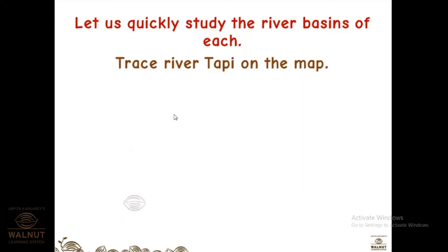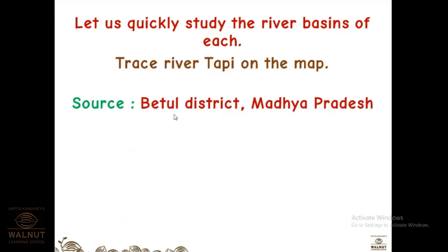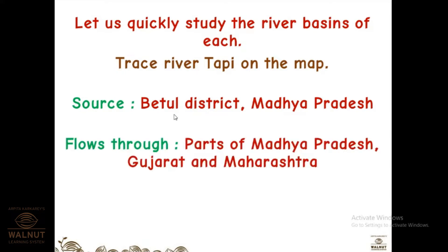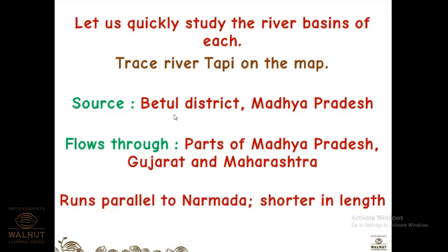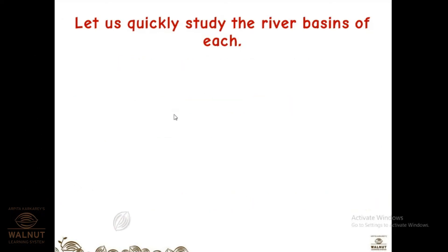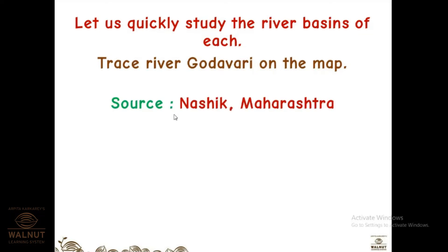Next is the Tapi River, which originates in Betul district in Madhya Pradesh. It flows through parts of Madhya Pradesh, Gujarat, and Maharashtra. It runs parallel to Narmada and is shorter in length than the Narmada River.